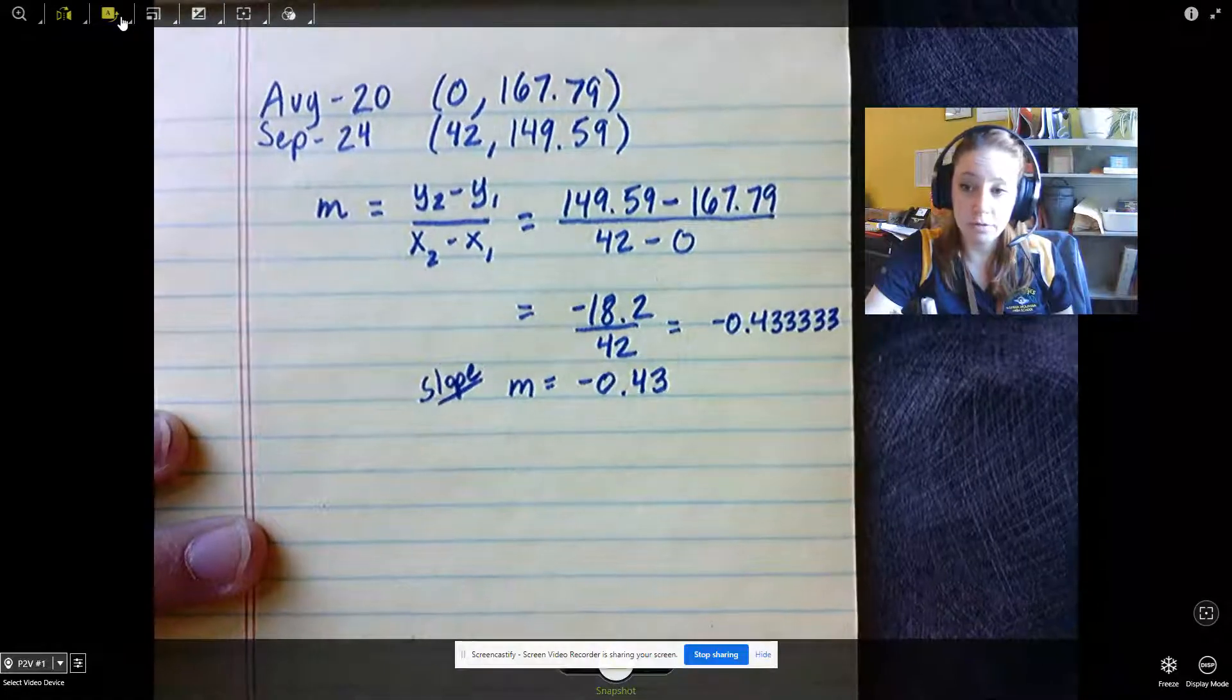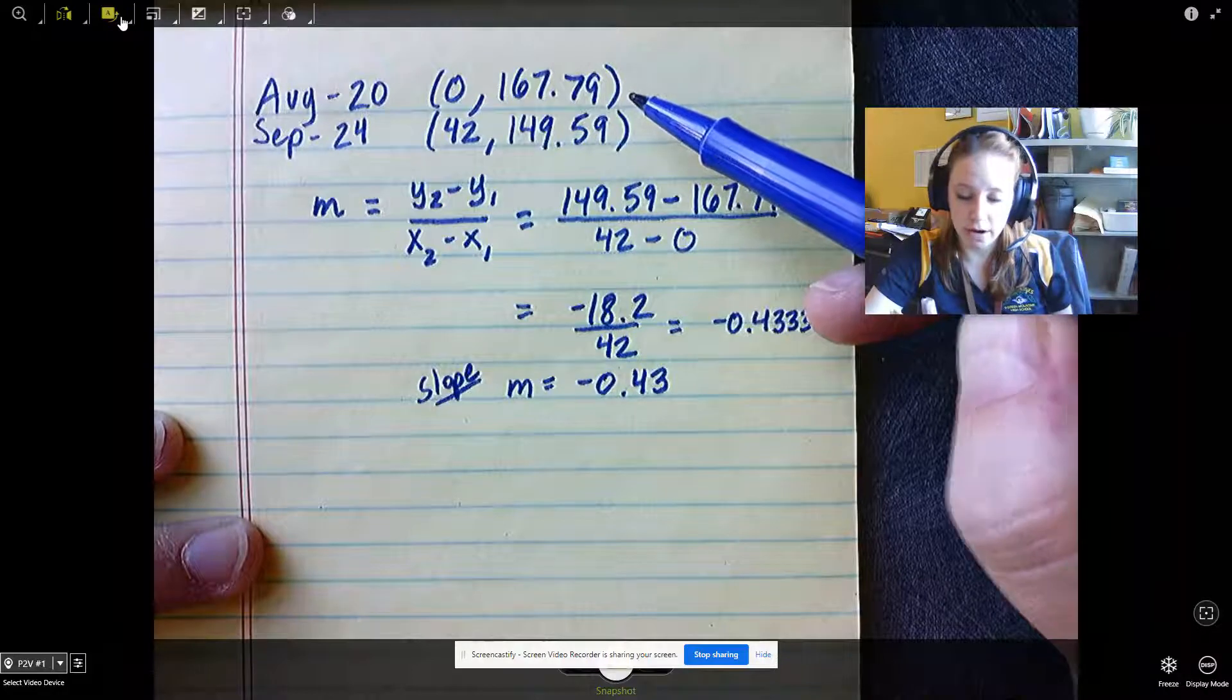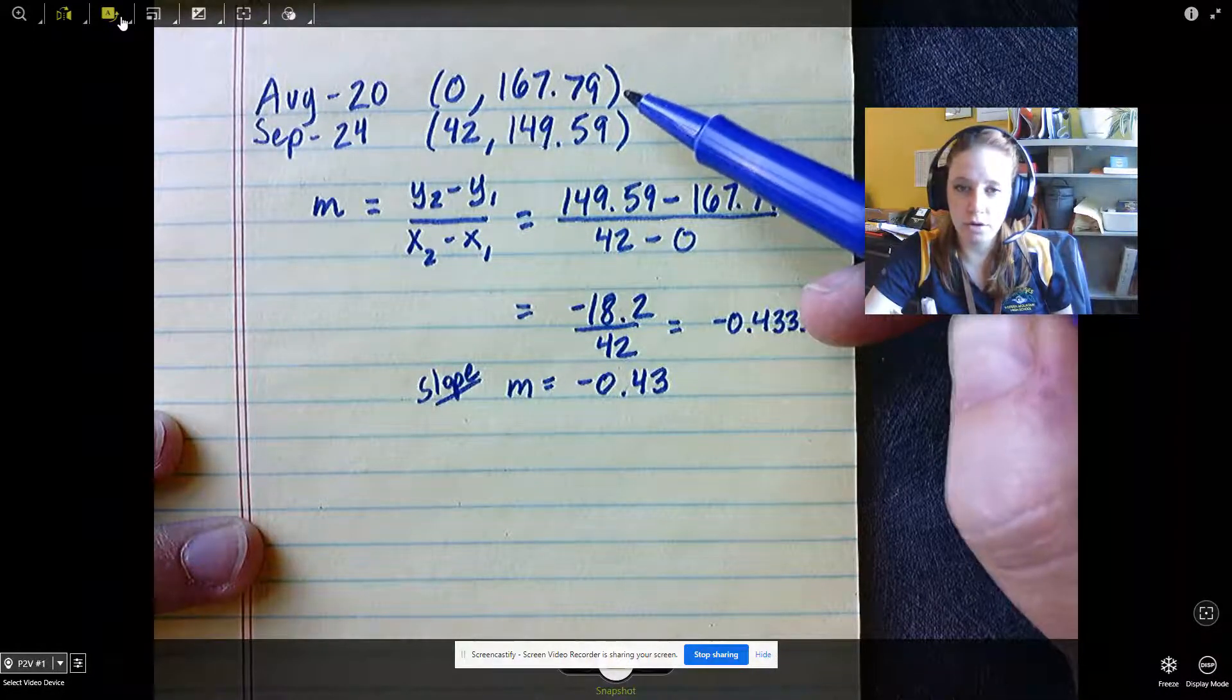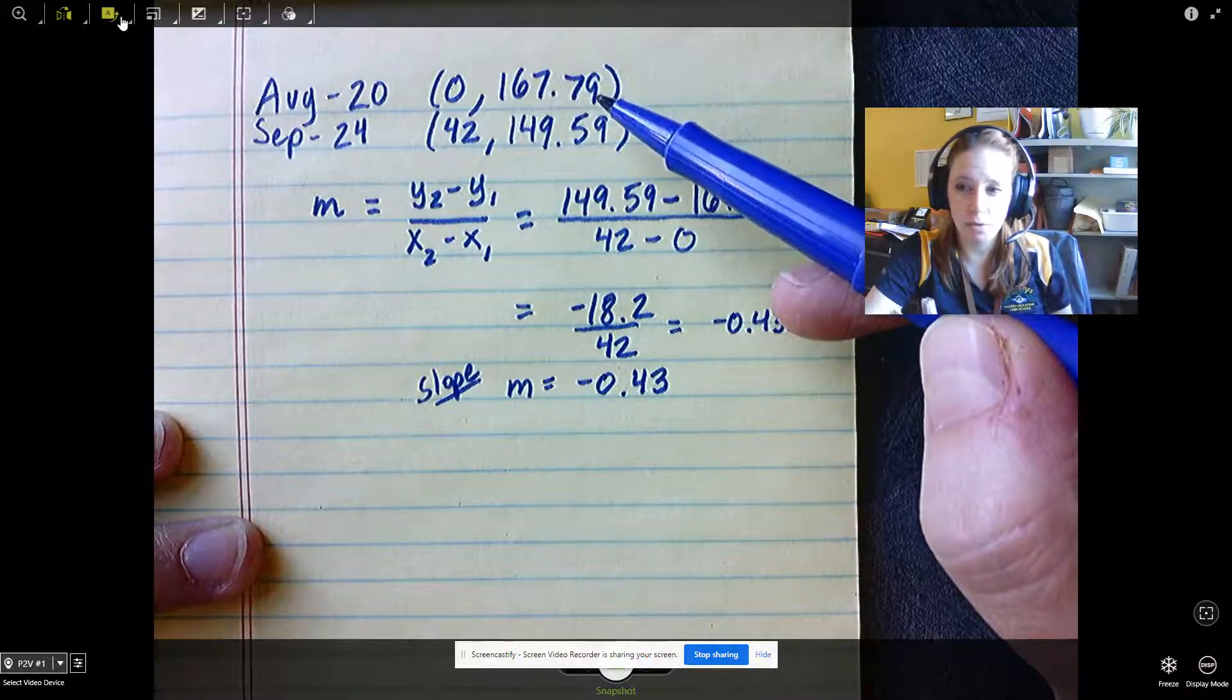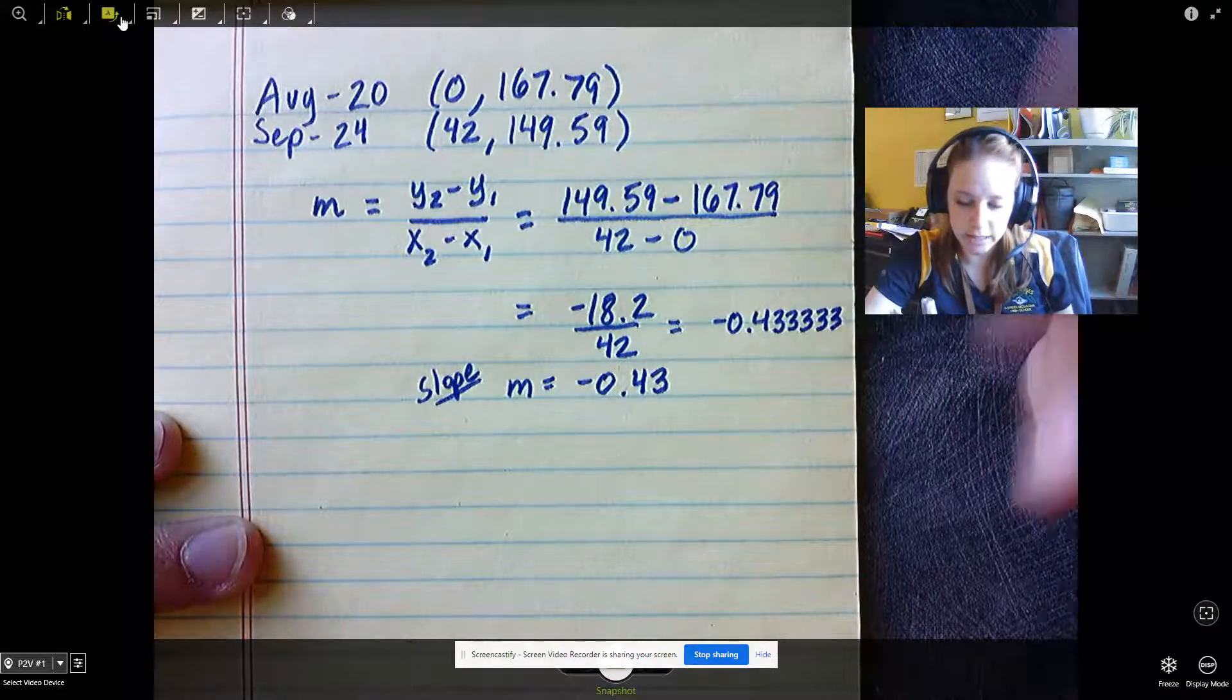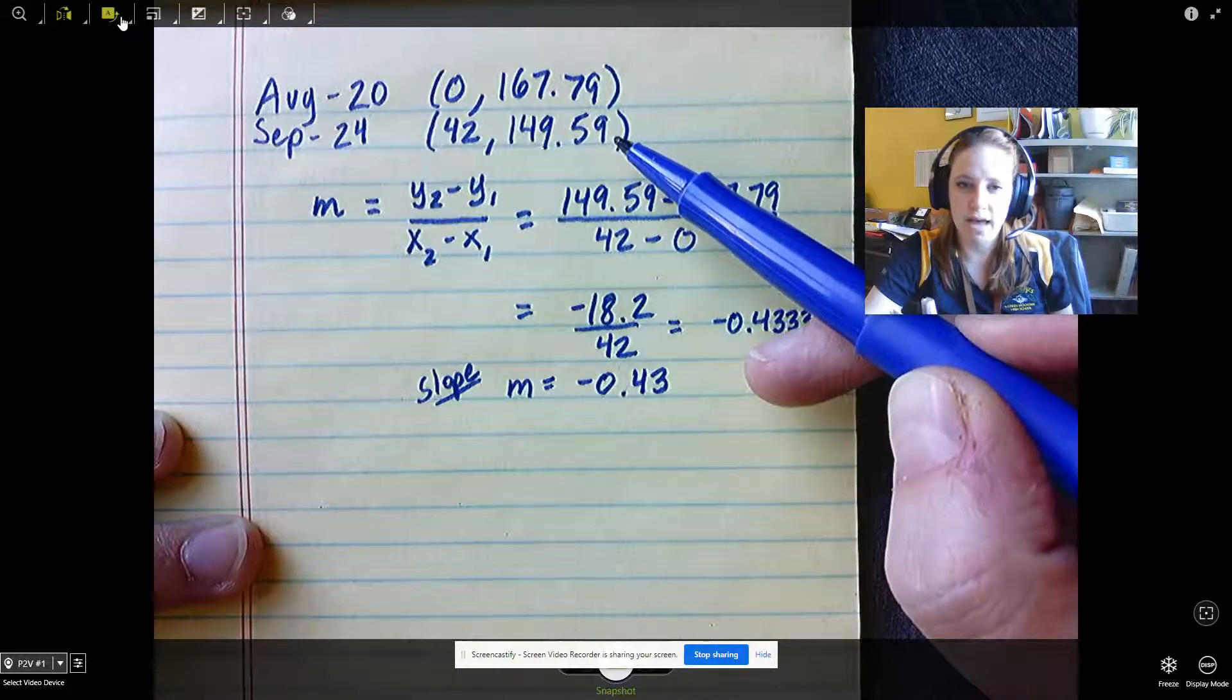We're going to use that slope to write an equation. Now this point here represents our starting value, or our y-intercept. We could go straight to slope-intercept form from this point. But I want to show you how you could do it using point-slope, and you could use this equation to get the same value.